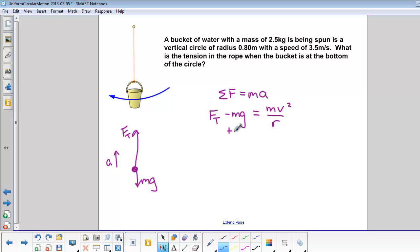Solve for T by adding Mg to both sides. Ft is equal to Mv squared over R plus Mg.